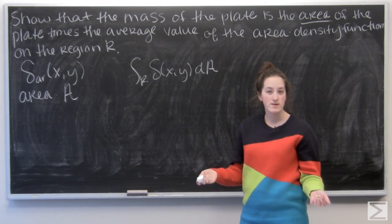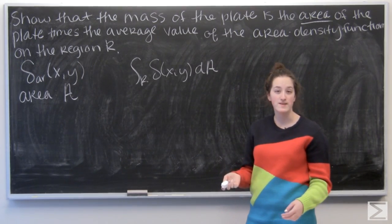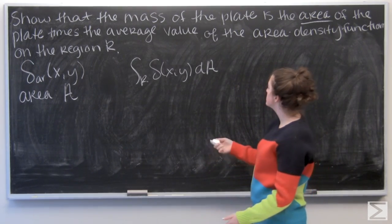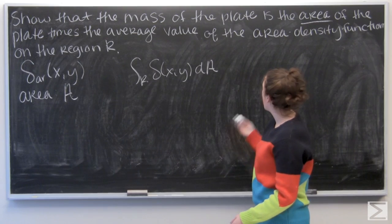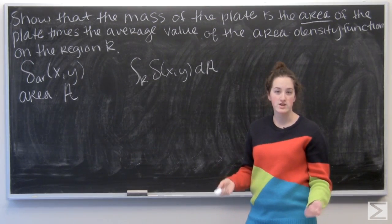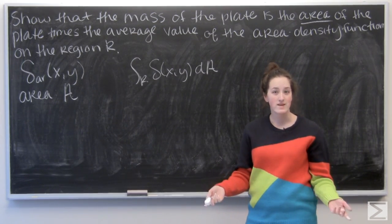And as we learned recently, that actually will give us the mass of the plate. So this is right. We can multiply the average value of the area density function by the area of the region and get the mass of the plate.